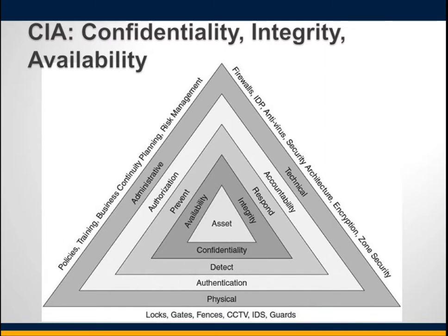Which of the three — confidentiality, integrity, or availability — is considered most important? The answer is: it depends. In different organizations with different priorities, one may take lead over the others. For instance, a local bank might consider integrity most important, while an organization responsible for data processing might see availability as the primary concern. For Google, having google.com up and servicing user requests is more of a requirement than keeping all their systems encrypted.